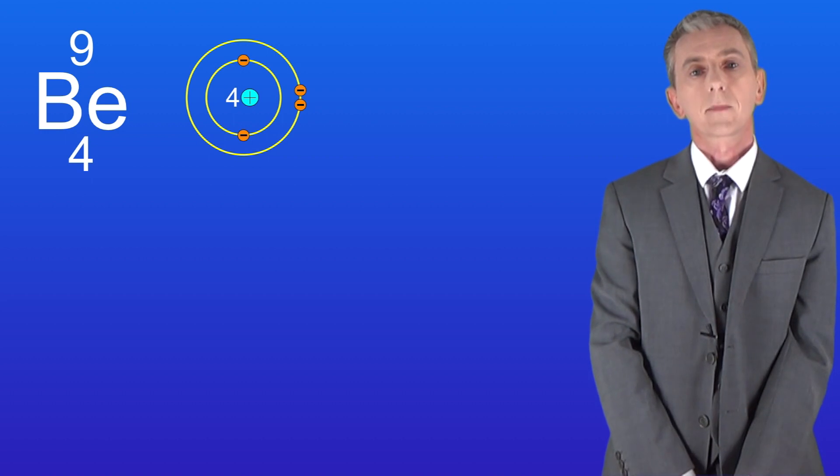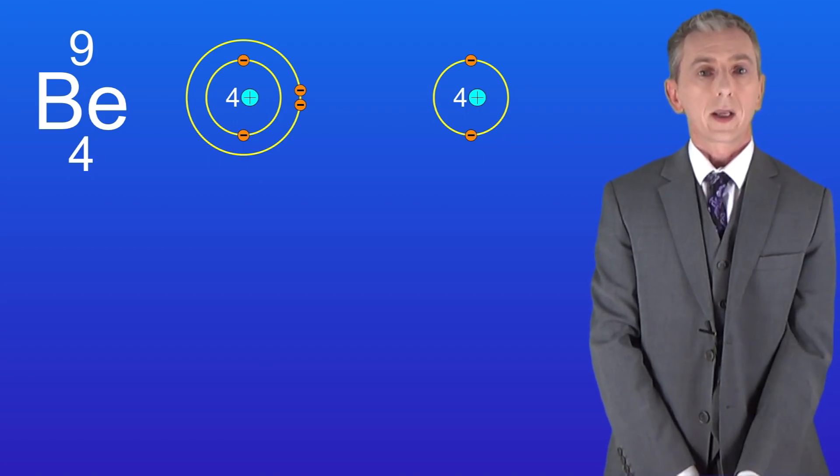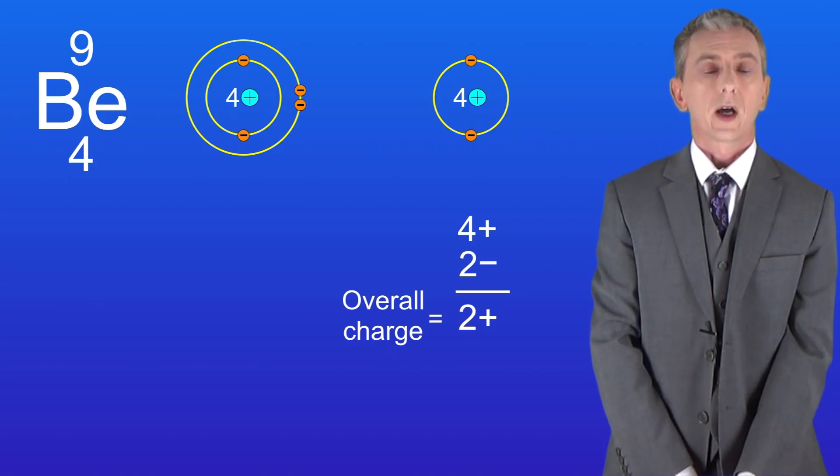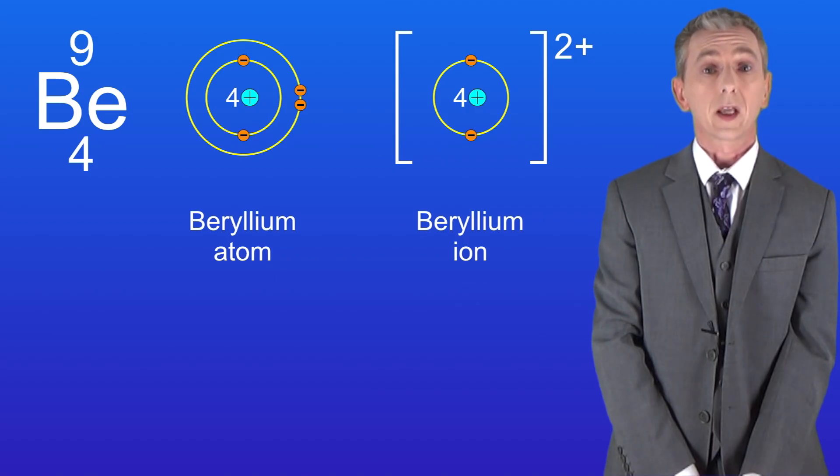Here's one final example for you to try. This shows the metal beryllium — pause the video and draw the structure of the beryllium ion. The beryllium atom has got two outer electrons, so it must lose these to achieve a full outer energy level. In the nucleus we've got four positive protons but now we only have two negative electrons, so there's an overall two positive charge. This is now called the beryllium ion.